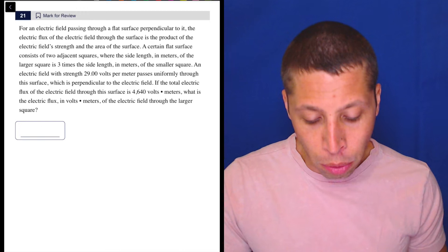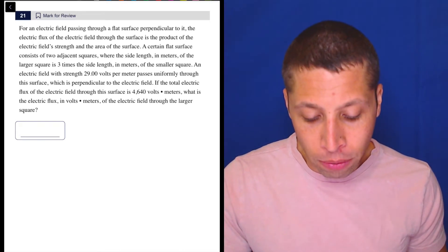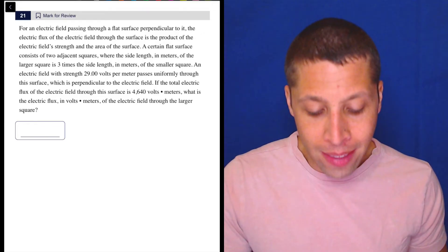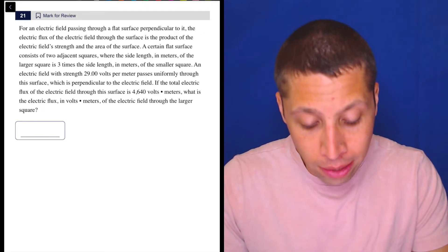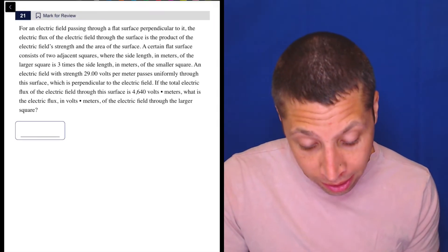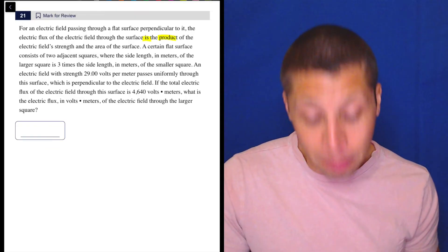For an electric field passing through a flat surface perpendicular to it, the electric flux of the electric field through the surface is the product of the electric field strength and the area of the surface. Okay. Let's not get complicated in the science. I have no idea what that means, but I do know what a product is. So product means multiply and is means equals.